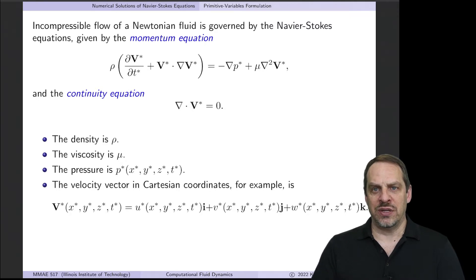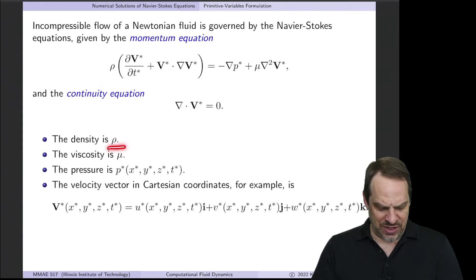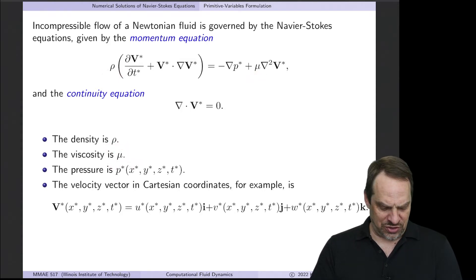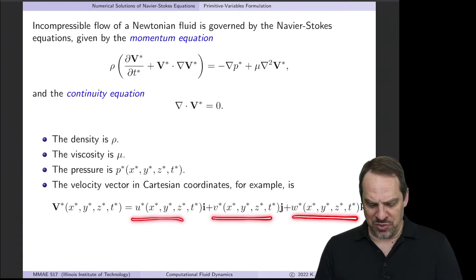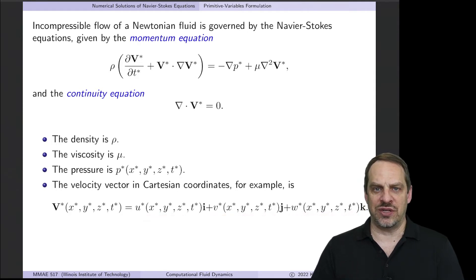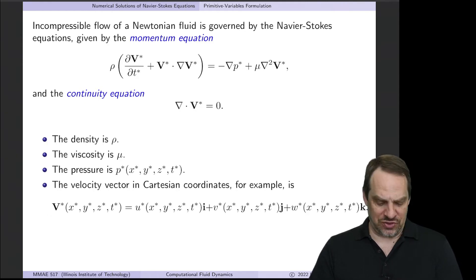We'll write it all out in non-vector form shortly. We have some physical quantities such as density and viscosity μ in the viscous terms, and then our dependent variables: pressure, and the u, v, and w velocities in the x, y, and z directions respectively. That's what comprises the velocity vector v*.